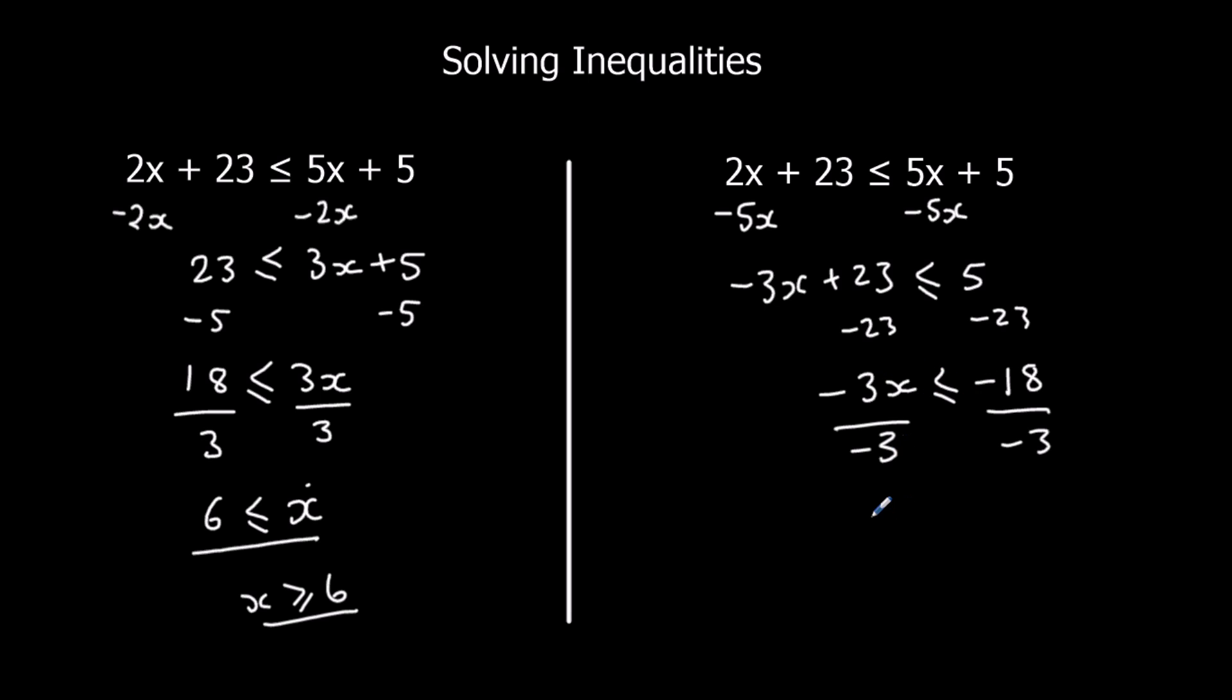So this is going to be x. The sign is flipping over now. So it's flipping over because I've divided by a negative number, 6.